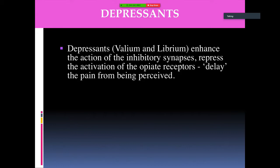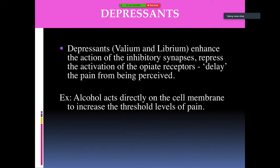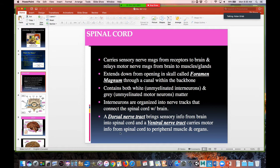Depressants like Valium or Librium enhance the action of inhibitory synapses and delay pain from being received by repressing opiate receptor activation. Alcohol is a depressant that acts directly on cell membranes to increase threshold levels of pain, through a slightly different mechanism. Once you have listened to this tutorial, make sure you submit a tutorial summary.